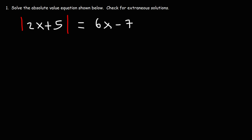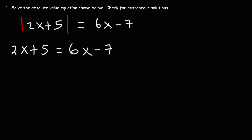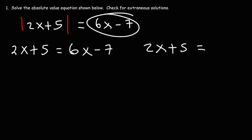Let's start with this example: the absolute value of 2x plus 5, set equal to 6x minus 7. To solve this absolute value equation, we need to write two equations. We set what's inside equal to the positive value of the right side, 6x minus 7, and also equal to the negative value, negative 6x minus 7.